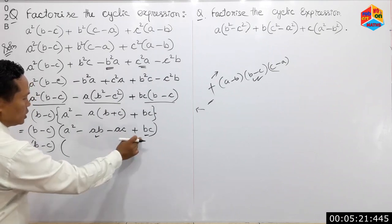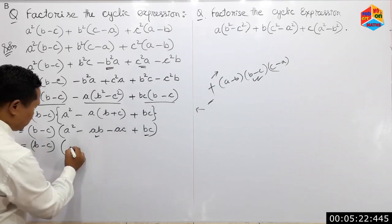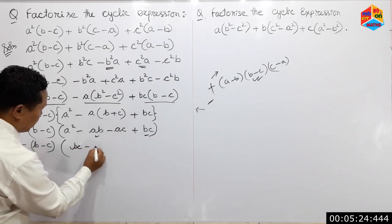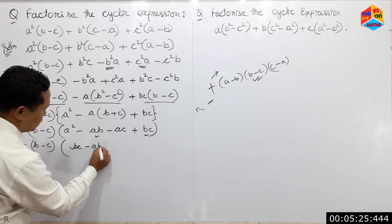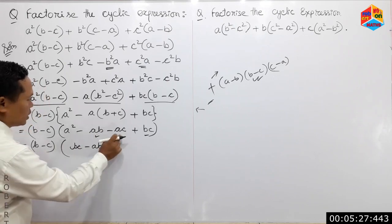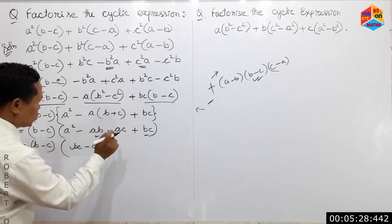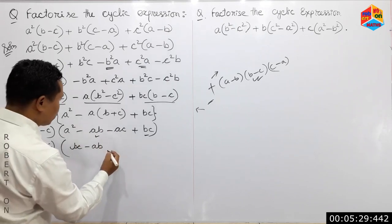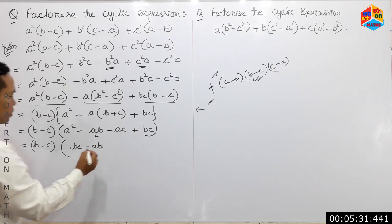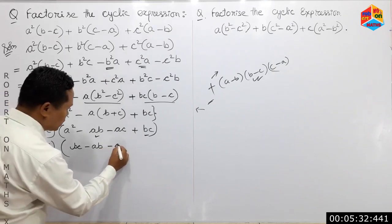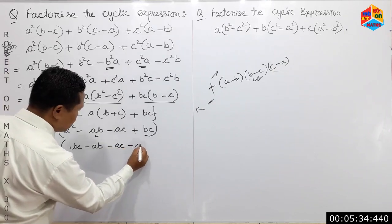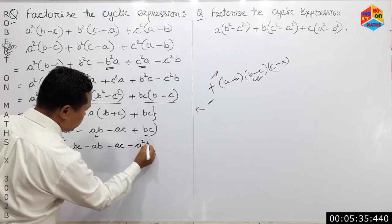We have to write this: bc minus ab. This is the first bracket (b1). This is minus ac minus a-squared.